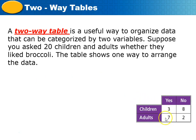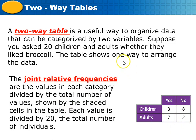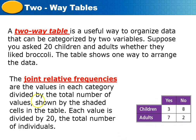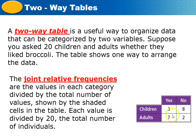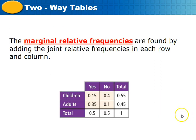The table shows how many children and adults like broccoli, and how many don't. Joint relative frequencies are the values in each category divided by the total number of values, shown by the shaded cells. Each value is divided by 20, because 3 plus 7 is 10, and 8 plus 2 is 10, giving a total of 20 people. So we divide 3 by 20, 7 by 20, 8 by 20, and 2 by 20.